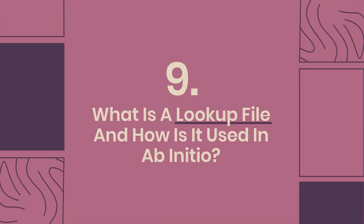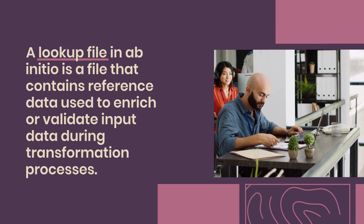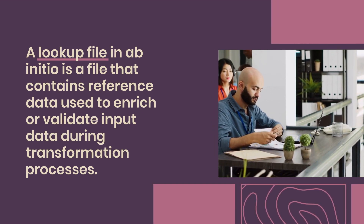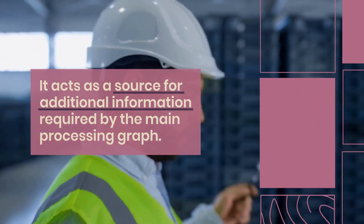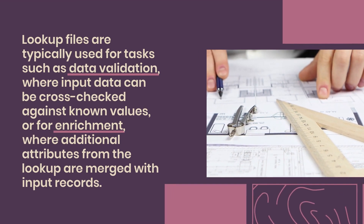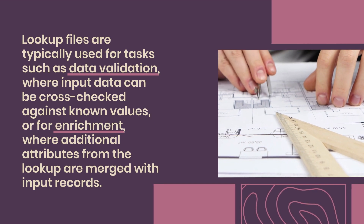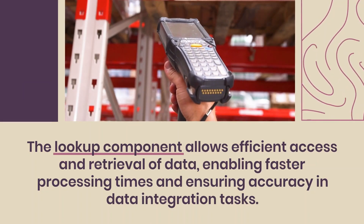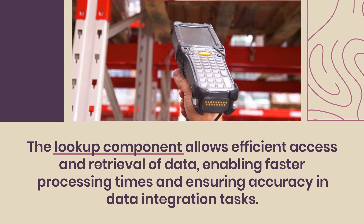Question 9: What is a lookup file and how is it used in AbInitio? A lookup file in AbInitio is a file that contains reference data used to enrich or validate input data during transformation processes. It acts as a source for additional information required by the main processing graph. Lookup files are typically used for data validation — where input data is cross-checked against known values — or for enrichment, where additional attributes from the lookup are merged with input records. The lookup component allows efficient data access and retrieval, enabling faster processing times and ensuring accuracy in data integration tasks.